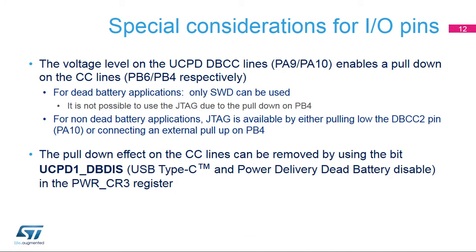When the microcontroller is unpowered, it still presents the dead battery pull-down, provided that UCPD_DBCC1 and UCPD_DBCC2 pins are each connected to UCPD_CC1 and UCPD_CC2 pins respectively. Since JTAG TRST and UCPD_CC2 are multiplexed on the PB4 pin, it is not possible to use JTAG and dead battery signaling at the same time. For non-dead battery applications, JTAG is available on the condition that PB4 is not pulled down — achieved by either pulling down the DBCC2 pin or connecting an external pull-up on PB4.